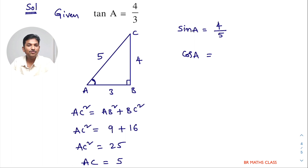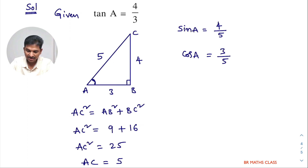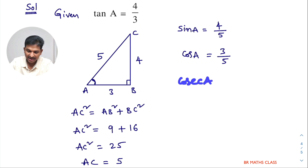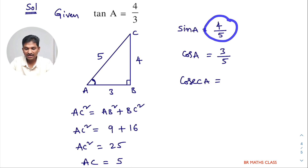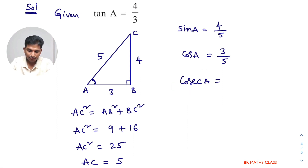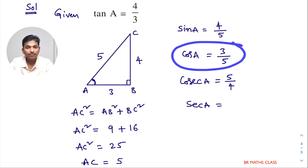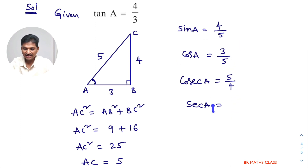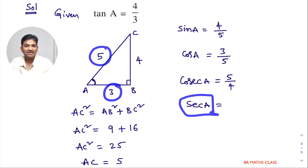Cos A is adjacent side by hypotenuse, so cos A equals 3 divided by 5. Tan A is already given in the question, so no need to write that. Cosecant A is the reciprocal of sin A — directly 5 by 4 — or using the formula: cosecant A is hypotenuse divided by opposite side, which is 5 by 4. Secant A is reciprocal of cos A, giving 5 by 3; or using the formula, secant A is hypotenuse divided by adjacent side, that is 5 by 3.